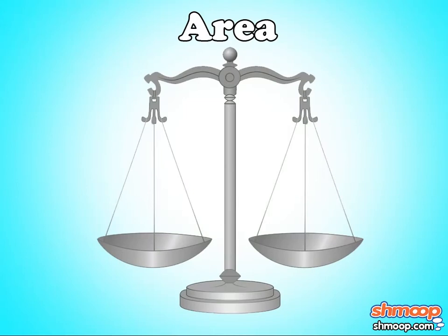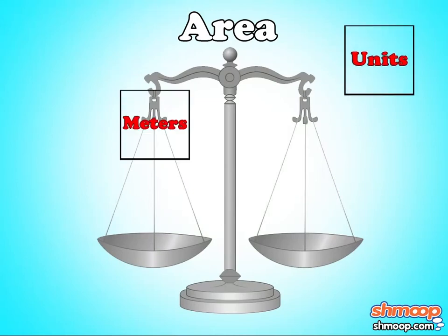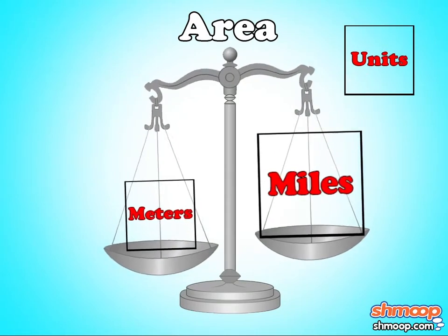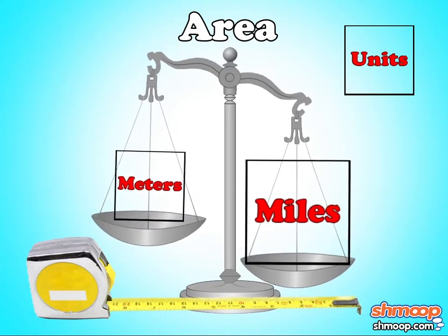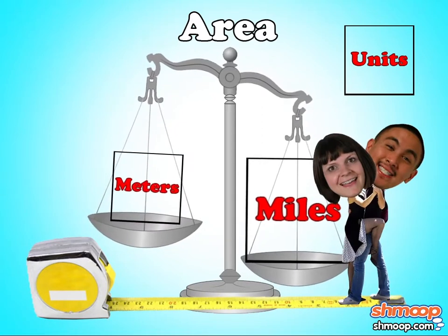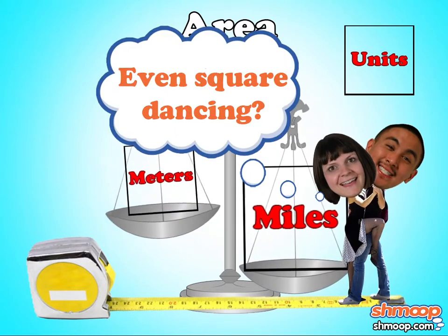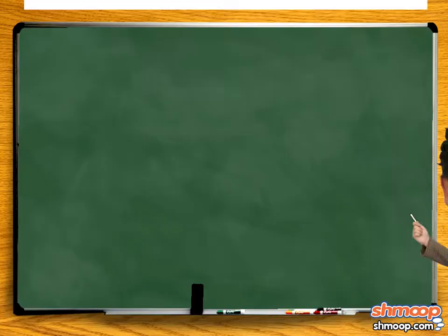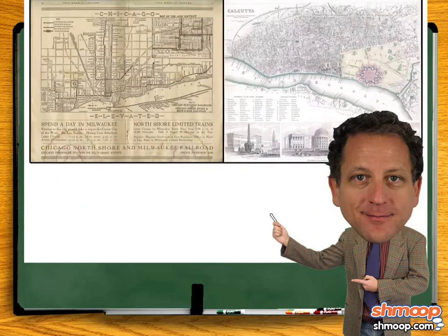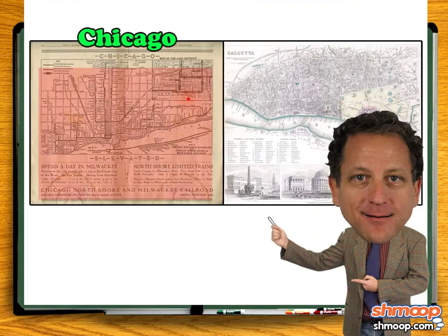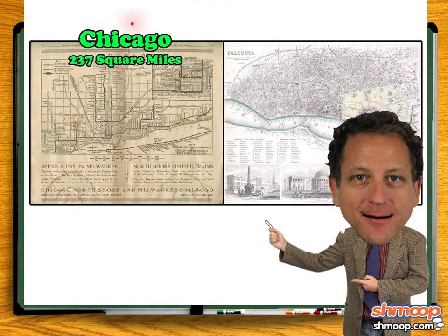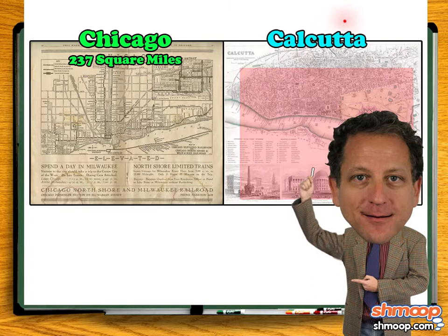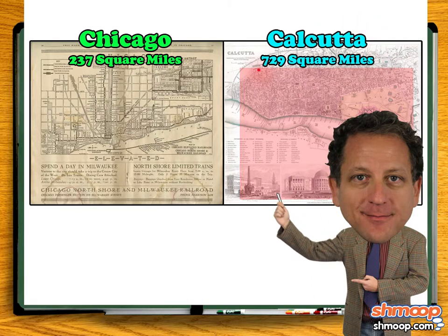Area is measured in square units, which could be square meters, square miles, or any other sort of square measurement that strikes your fancy. For example, the area of Chicago is 237 square miles, and Calcutta, India is a whopping 729 square miles.